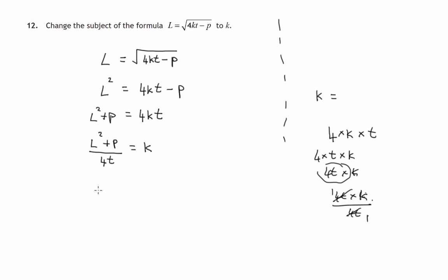So we've done it and we just need to write it the normal way around. Don't normally put formulas with the letter we're trying to find on the right hand side. So K equals L squared plus P divided by 4T.